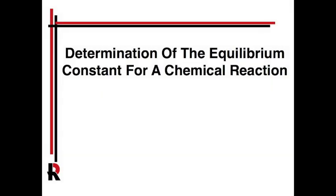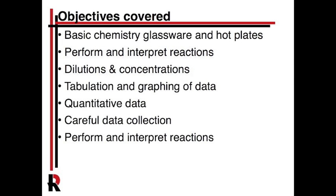This is the pre-lab video for determination of the equilibrium constant of a chemical reaction from the general chemistry lab manual. This lab will focus on equilibrium constants and will cover a number of objectives: how to use glassware, this is technically a reaction, and you're going to be doing a lot of dilutions and concentrations and using Beer's Law.